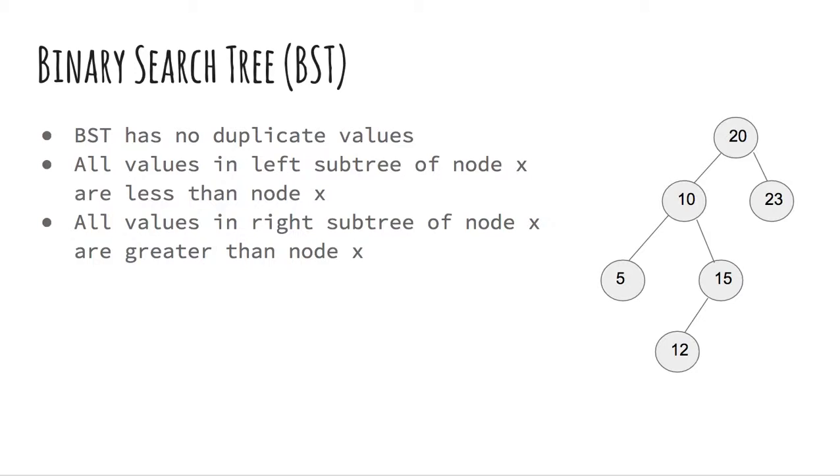Now, let's look at a binary search tree which is a more specific version of a tree. It is also called commonly as a BST. In this type of tree, all the values to the left of a node are lesser than it. And all the values to the right of a node are greater than it. Also, the tree contains no duplicate values.